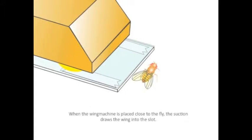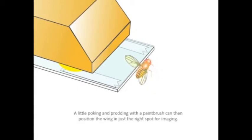When the Wing Machine is placed close to the fly, the suction draws the wing into the slot. A little poke and prod with a paint brush can then position the wing in just the right spot for imaging.